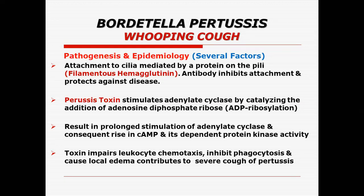The pertussis toxin stimulates adenylate cyclase and catalyzes the addition of ADP ribosylation. This ADP ribosylation results in prolonged stimulation and export of adenylate cyclase, which consequently increases cyclic AMP and proteins dependent on cyclic AMP.